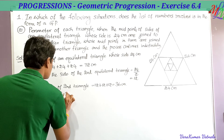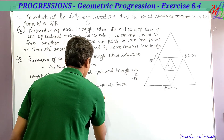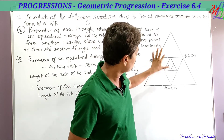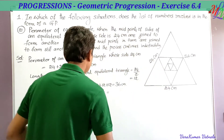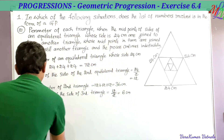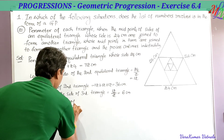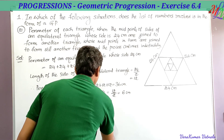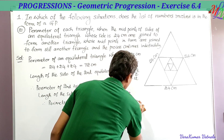The length of the side of the third triangle is half the second, which is 12 divided by 2 = 6 centimeters. Therefore, the perimeter of the third triangle is 6 + 6 + 6 = 18 centimeters.